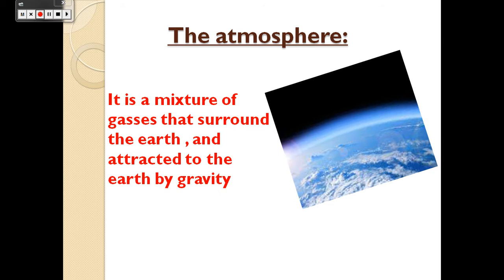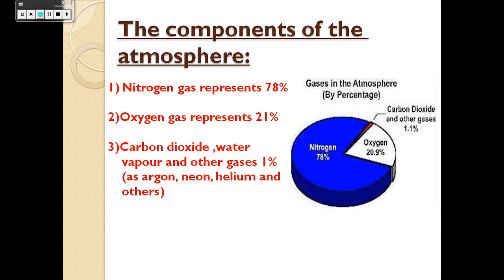In the last session, we studied that the atmosphere is a mixture of gases that surround the Earth and are attracted to the Earth by gravity. We also studied the components of the atmosphere: Nitrogen, which represents 78%; Oxygen, 21%; and Carbon Dioxide, Water, and other gases, only 1%.